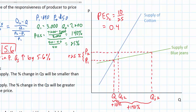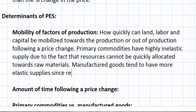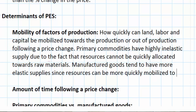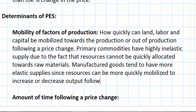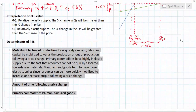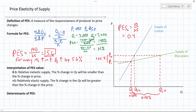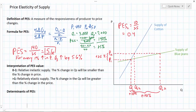The only reason that the quantity supplied can be increased at all is because goods like cotton can be stored in warehouses, so inventories can be tapped into to increase the quantity supplied following the price hike. Manufactured goods, on the other hand, tend to have more elastic supplies since resources can be more quickly mobilized to increase or decrease output following a price change. Generally speaking, primary commodities — anything that is mined or farmed — have relatively inelastic supplies, because producers cannot quickly ramp up or decrease output in response to price changes.